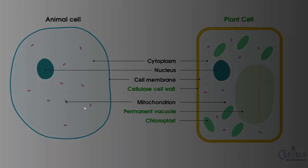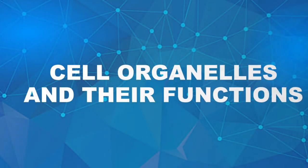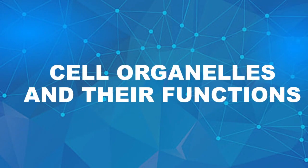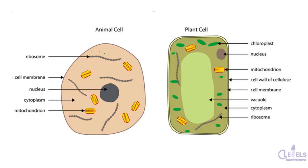Moving further, let's study the cell organelles and their functions. Here is another, more advanced diagram with more structures visible. You can still see that the plant cell has a specific shape while the animal cell does not, and you can identify it by that. In the plant cell, you can see there is a large vacuole in the middle, a cell wall, a cell membrane, and the nucleus is present in both of these cells.